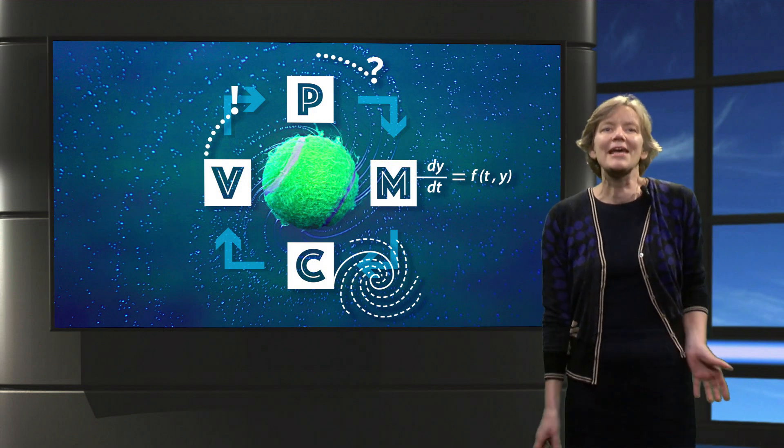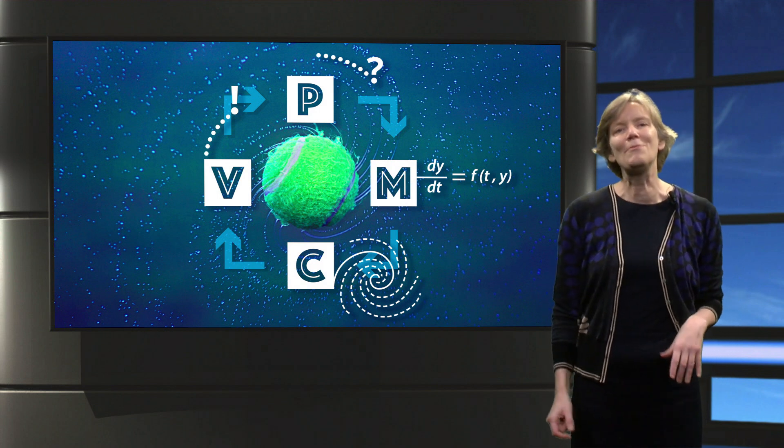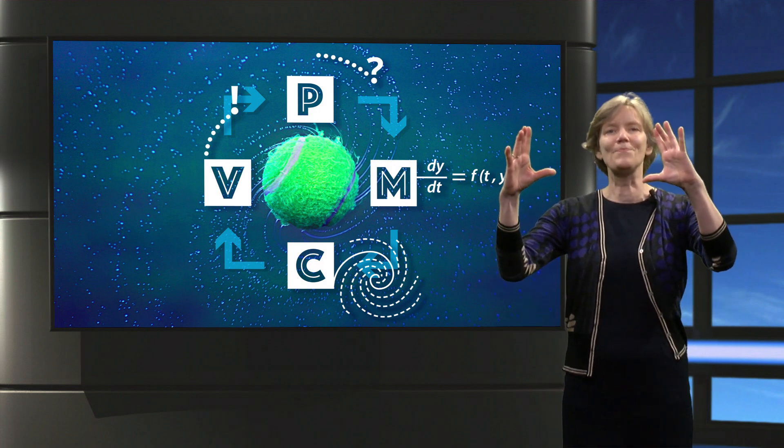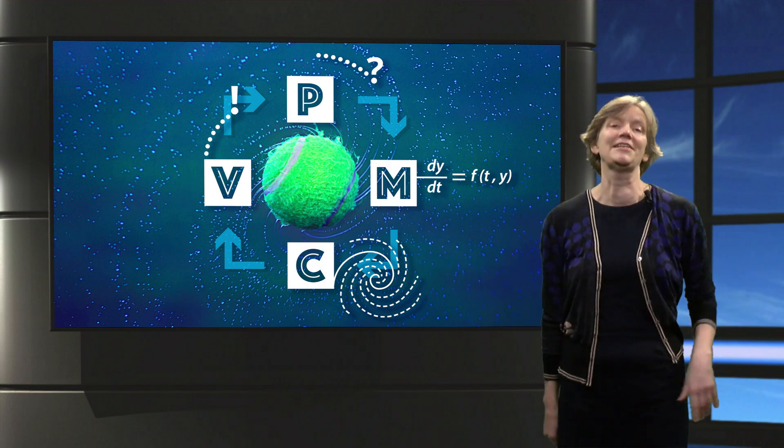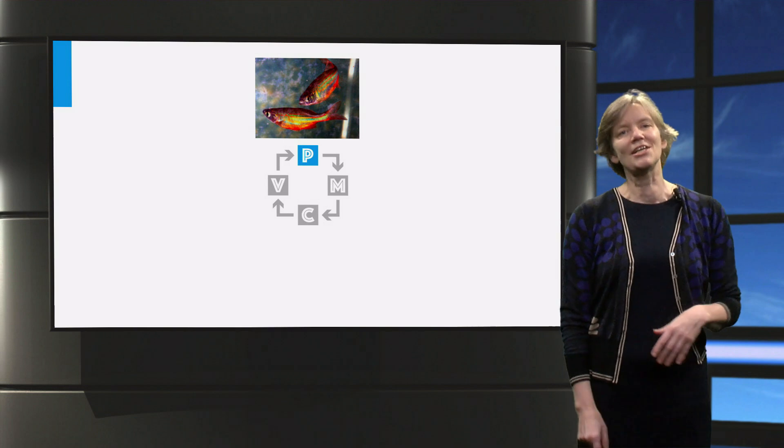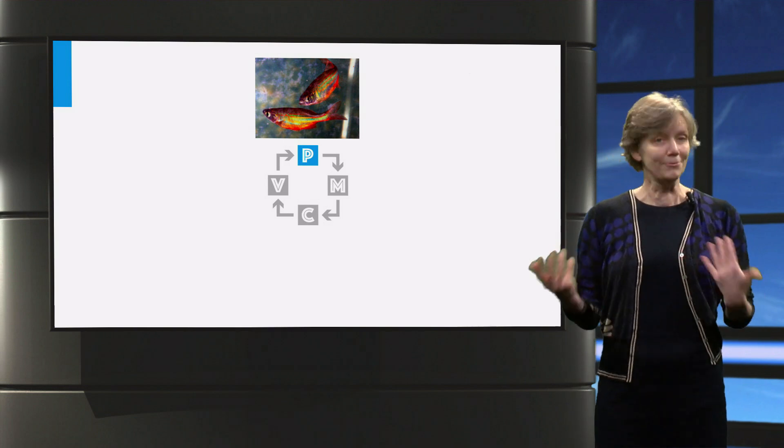So in this course we keep your eyes on the bowels and follow the whole modeling cycle: P for problem, M for mathematical model, C for calculations, and V for validation. As an example for mathematical modeling we will use rainbow fish.